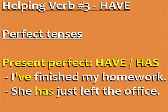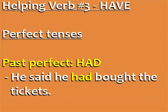Helping verb number three is 'have.' Use 'have' to form perfect tenses. In the present perfect, use 'have' and 'has': I've finished my homework, she has just left the office. In the past perfect, use 'had': he said he had bought the tickets.